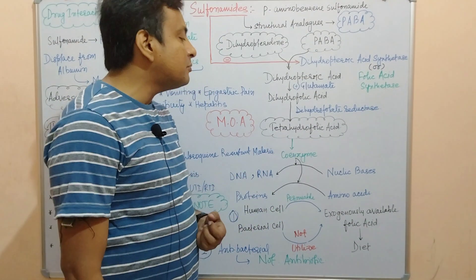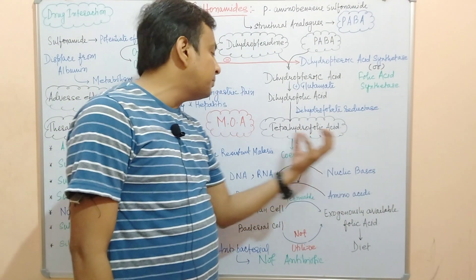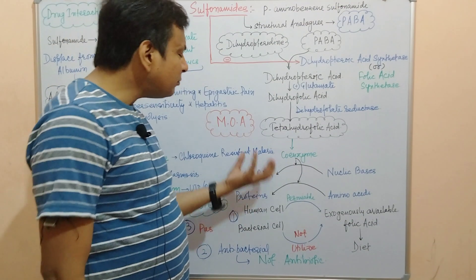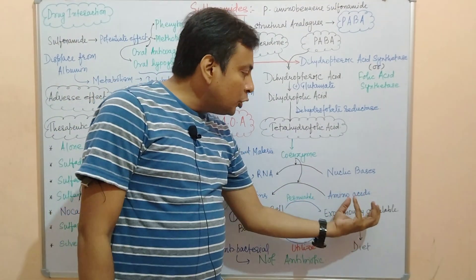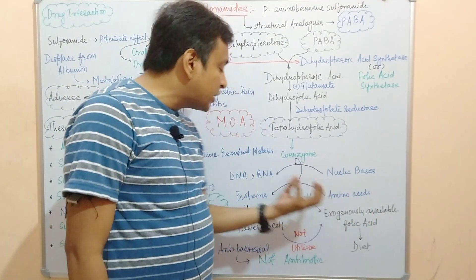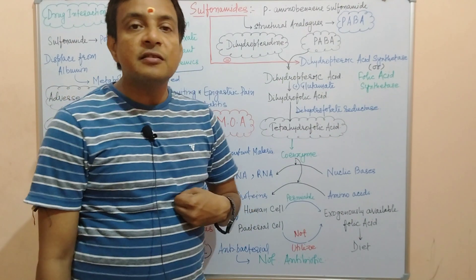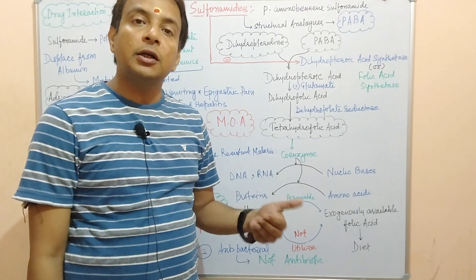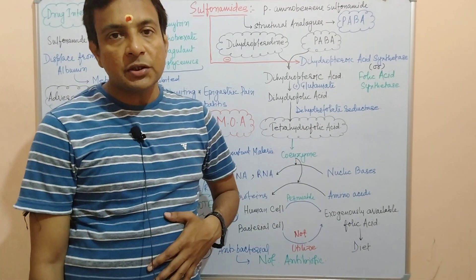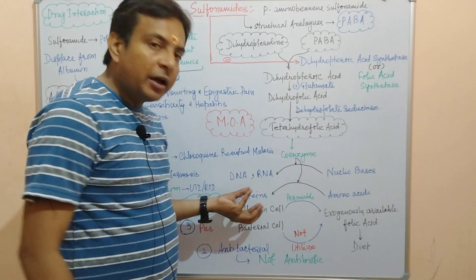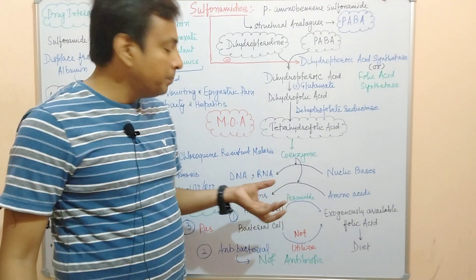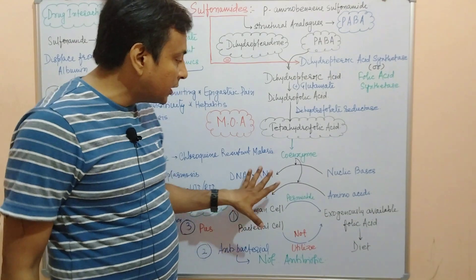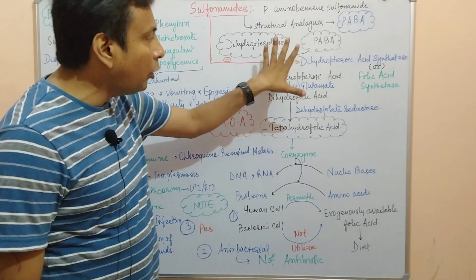When tetrahydrofolic acid is formed, it acts as a coenzyme. Acting as a coenzyme, it helps convert precursors into nucleic bases, and amino acids which are used to produce proteins. These proteins are required for further growth and replication processes, including DNA and RNA replication. These are the normal steps of bacterial cell metabolism.